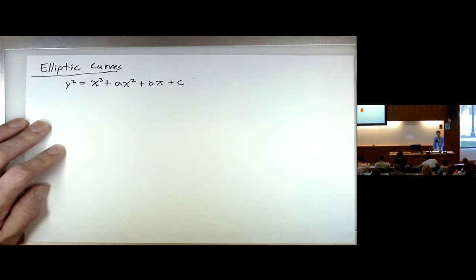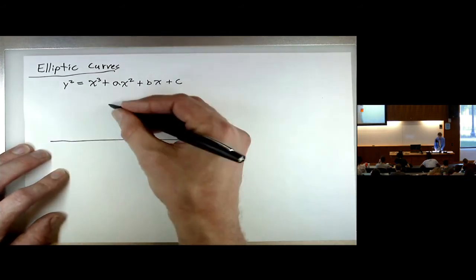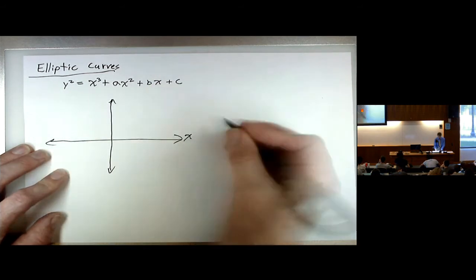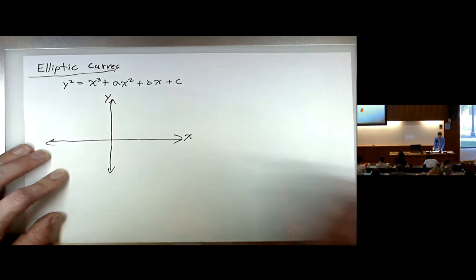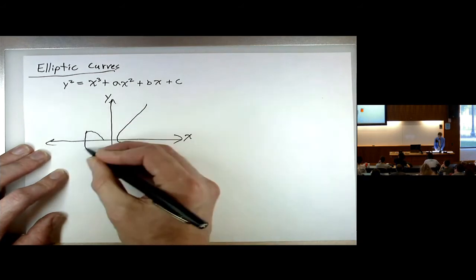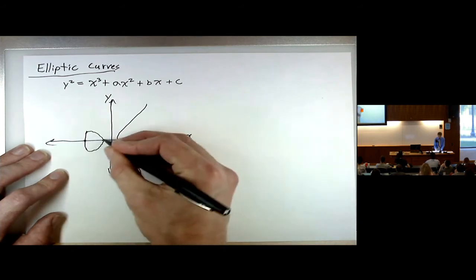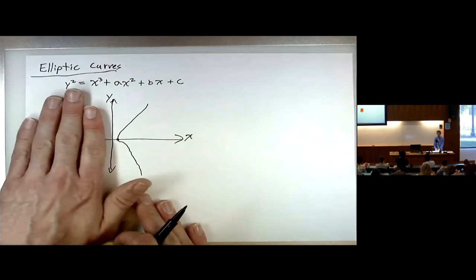You also want to assume that the roots of the cubic are distinct, otherwise you're not going to get an elliptic curve. If you draw the curve in the real plane — over the complex numbers, a finite field, or some other field — over the real numbers you might get something like this with two pieces. Each one of the intersection points with the x-axis corresponds to a root of the cubic polynomial, because that's where the y-coordinate is zero. If you have three real roots you get something like that, but if you have only one real root, then you have only that one piece.